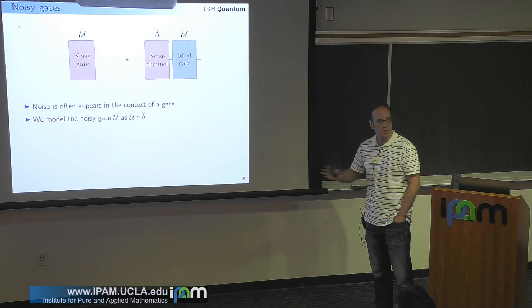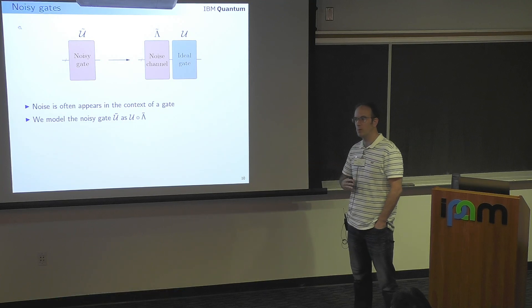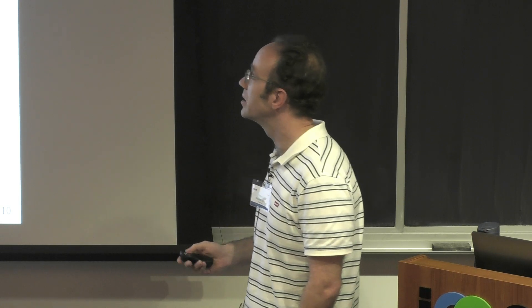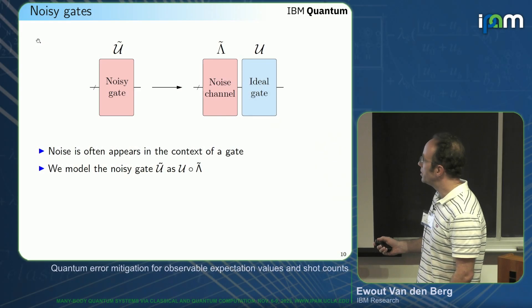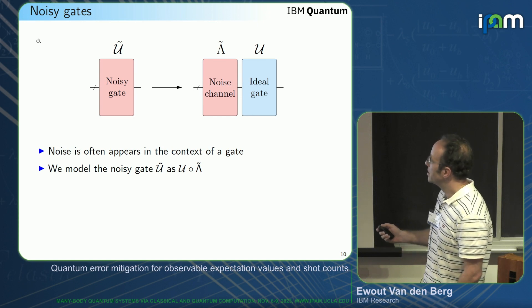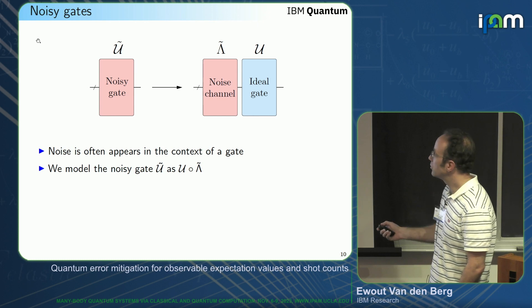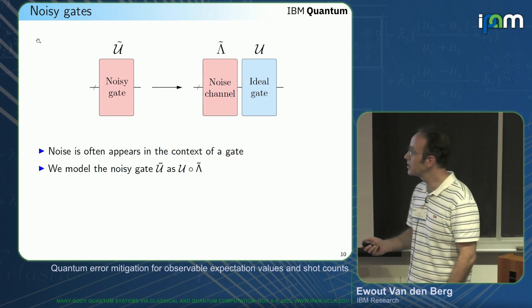Noise does not usually arise without a gate — we are mostly interested in applying noisy gates and trying to mitigate them. So how do we model a noisy gate? We say it is actually just a noise channel followed by the ideal gate. Now, what we said earlier is we want a Pauli noise channel, so we want to apply Pauli twirling: sample a Pauli before the noise channel, apply the noise channel, apply the Pauli again, then apply the ideal gate.